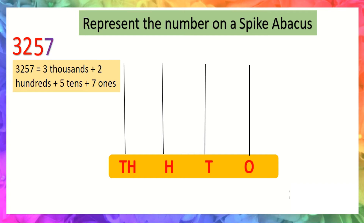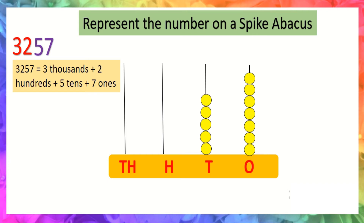So we will draw seven beads: one, two, three, four, five, six, seven. At tens place the digit is five, so we will draw five beads: one, two, three, four, five. At hundreds place the digit is two, so we will draw two beads: one, two.